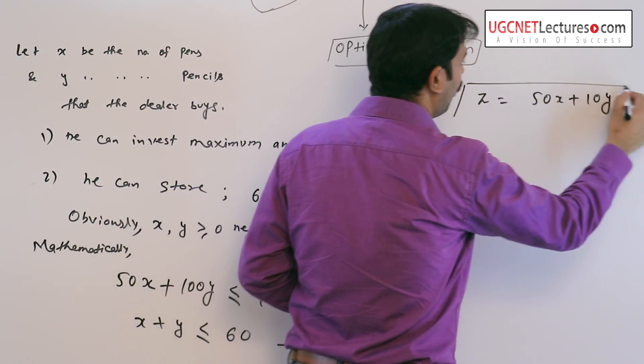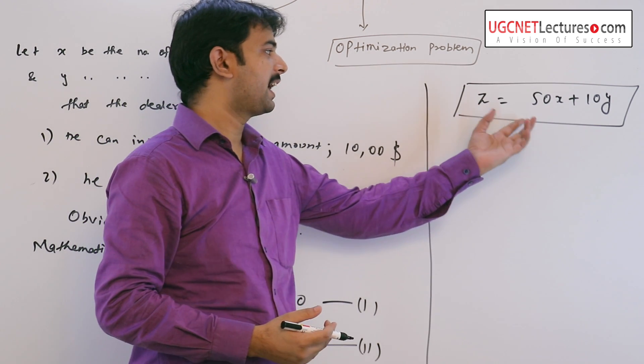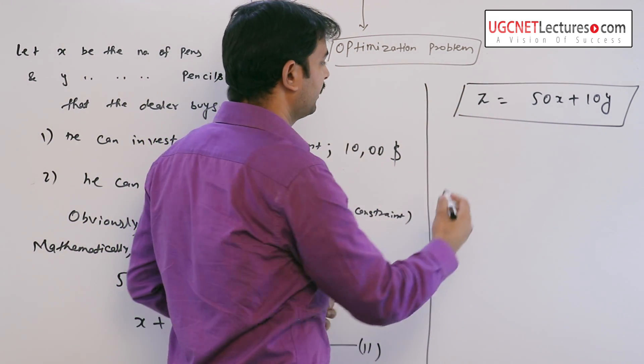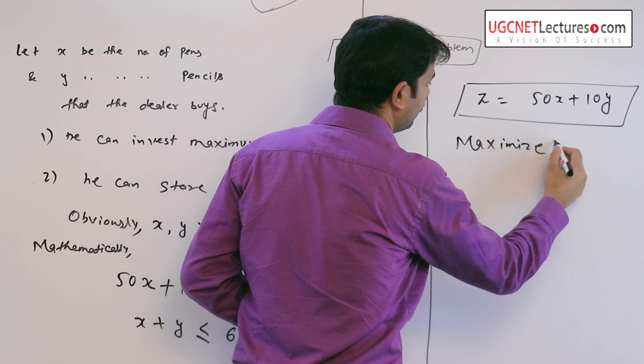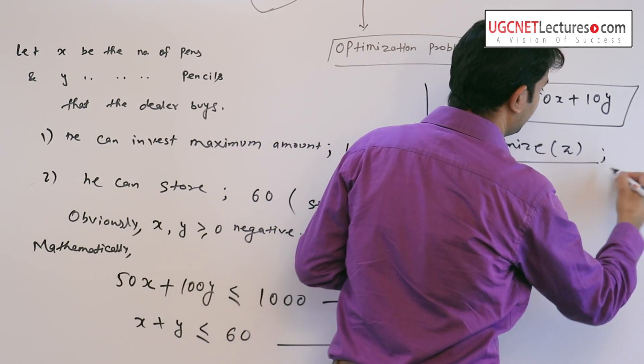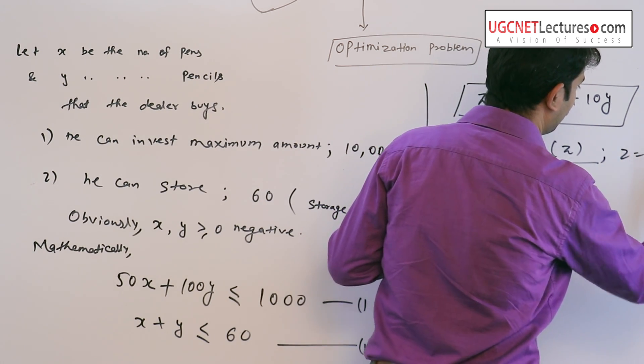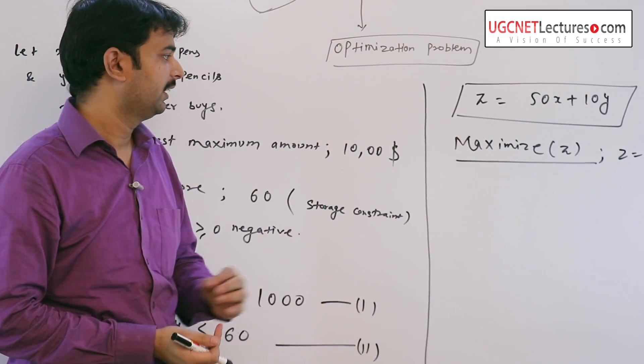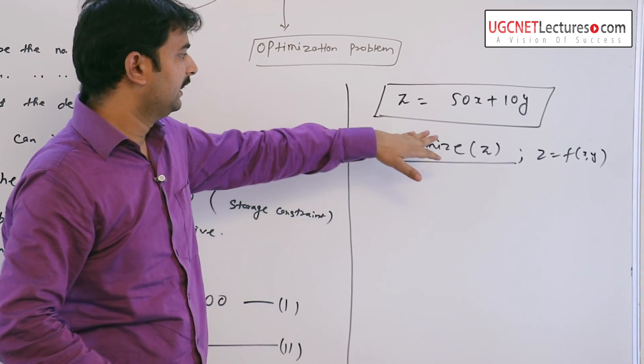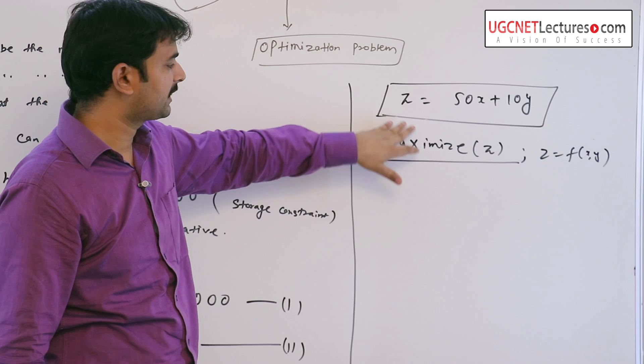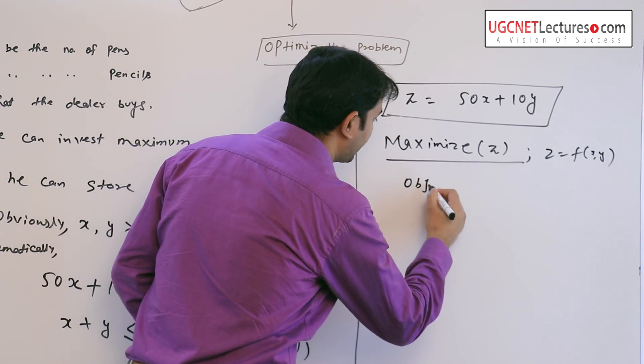That is his goal. The dealer's goal is maximize his profit, which is a function of x and y. That is we can say his goal is maximization of z. We can also say it is objective function as it is function of x and y.